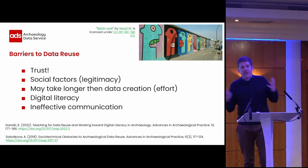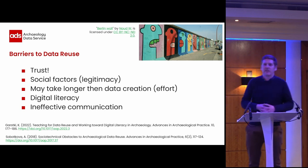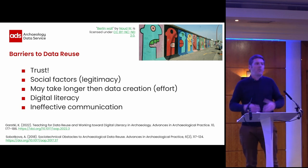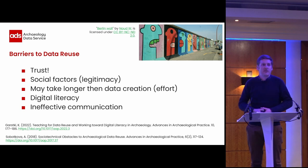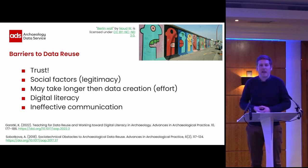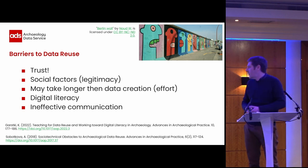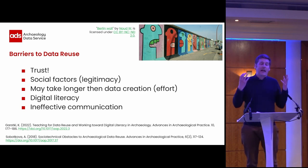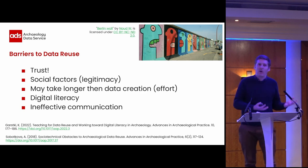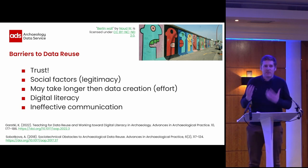There are obviously multiple barriers to reuse, which is part of the reason we're not seeing as much as we'd like. One is people trusting other people's data sets — do we have the information about how data was collected to encourage that trust? There are also social factors, such as whether people prefer primary data collection over secondary data collection, which we see a lot in academic research.